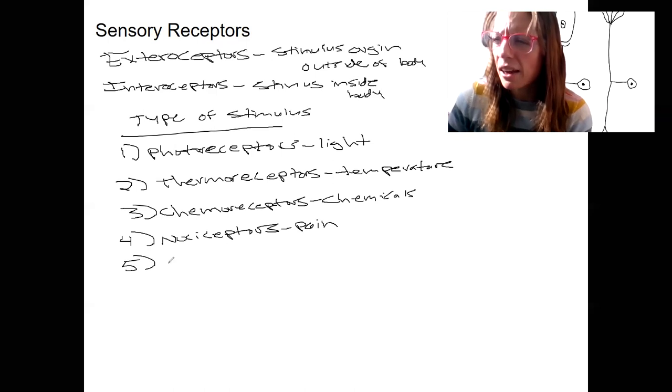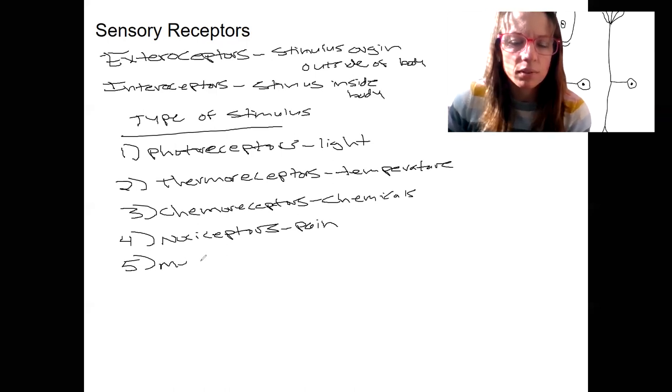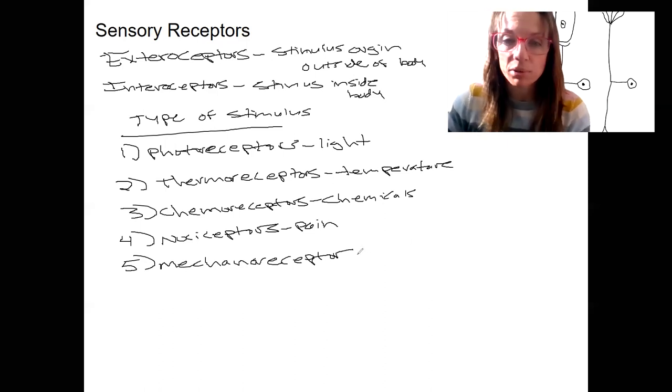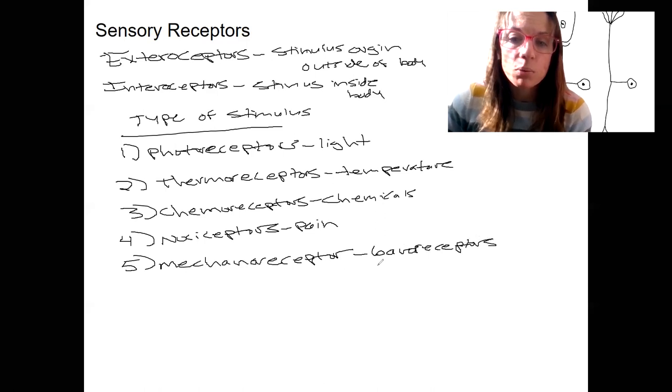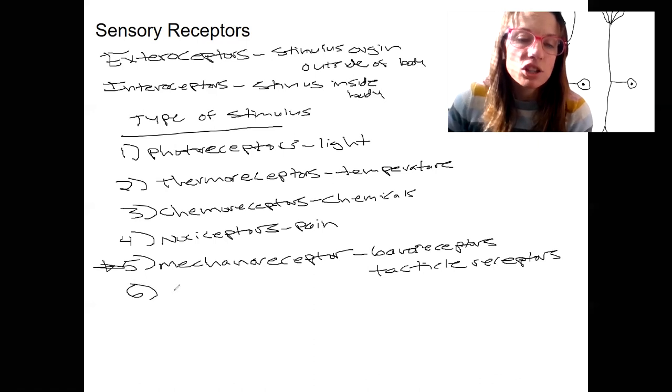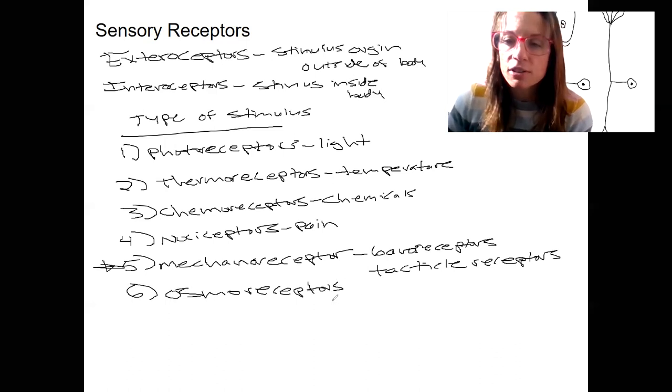And we've got a broad category called mechanoreceptors. You've heard of these, right? Mechanically gated ion channels is an example of this. When there's actual physical distortion of the membrane that would open, for example, these channels. These come in a lot of different types. So one is baroreceptors. Detect blood pressure. We also see various types of tactile receptors. So we're going to see quite a few different types of mechanoreceptors. The last one I just want to mention is osmoreceptors. These are detecting osmolarity, so blood osmolarity.